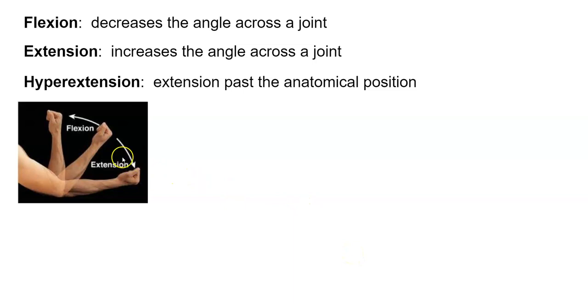Flexion and extension. You're familiar with this. Flexion is when you decrease the angle at a joint. So when this person's hand goes up, that's flexion. When their hand goes down, the angle here gets bigger. That's extension.